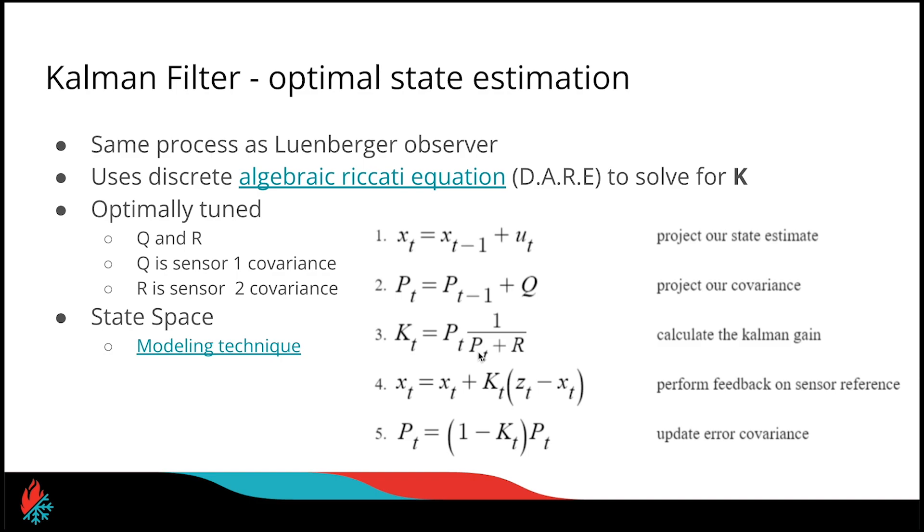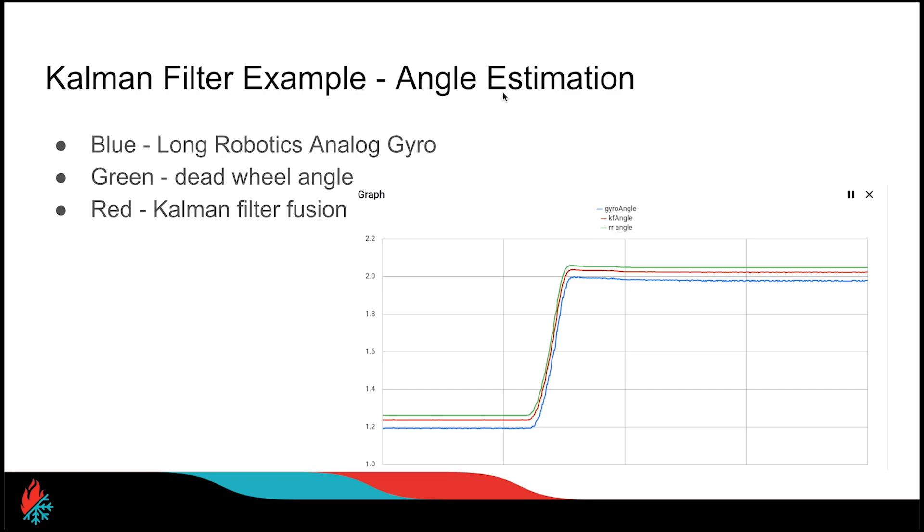With a Kalman filter or Luenberger observer, you don't necessarily have to use the second sensor. You can just use a model in the form of a state space model and then a sensor to correct the model. That is the traditional way to do it. Here you can see an example where we have the Modern Robotics analog gyro and dead wheel odometry fused together to produce an optimal measurement of our angle. What this does is helps eliminate some of the noise from the analog gyro, but also it helps correct some of the drift of the dead wheel odometry. We get a really powerful and robust angle measurement from the Kalman filter, and that's where the power of this comes from.